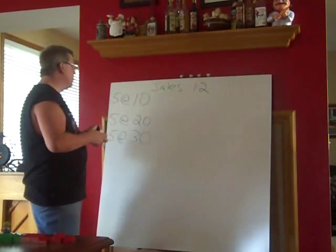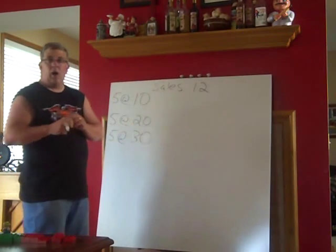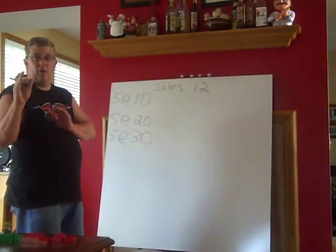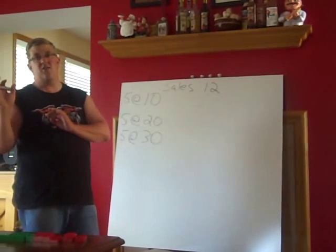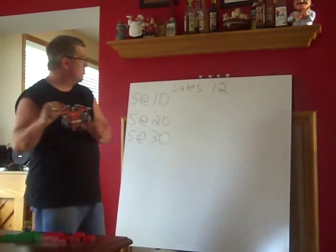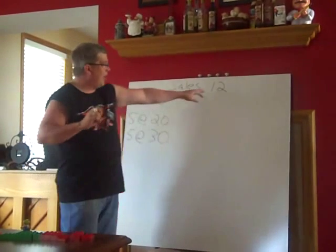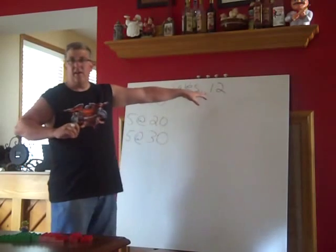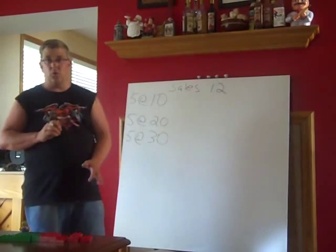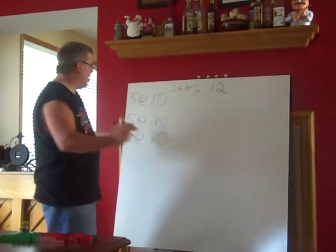Under FIFO, we keep the identity. So we want to figure out, for cost of goods sold, we need to find out what the 12 oldest ones are and their cost.